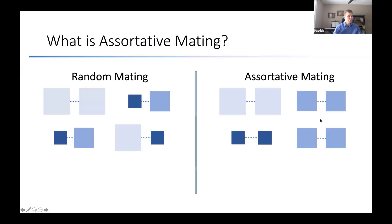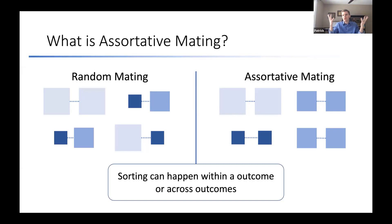First off, what is assortative mating? The basic idea is this phenomenon where parents are more similar than you might expect under a model of random mating, where people's spouses are essentially just drawn randomly from the population. This can happen within a trait — tall people are more likely to have children with tall people — but you could also imagine it happening across traits, like tall people being more likely to have children with educated people. We'll talk about both types throughout this talk.